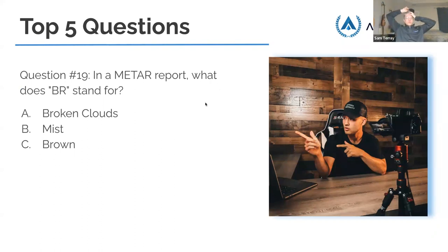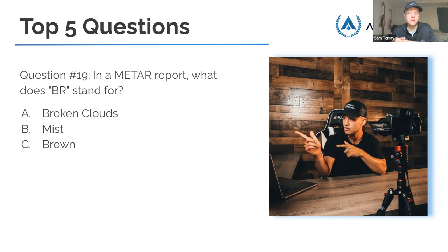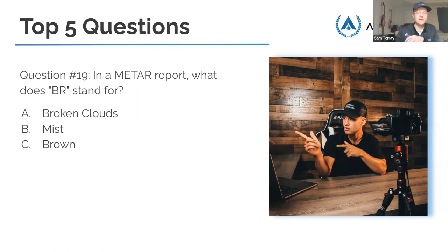Quiz question 1: In a METAR report, what does BR stand for? The answer is mist. Remember — baby rain! BR is a French word brème meaning mist. Question 2: The only cloud type forecast in a TAF report is what? The answer is B — cumulonimbus. TAF reports only specify cumulonimbus clouds.